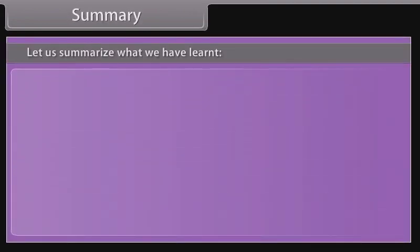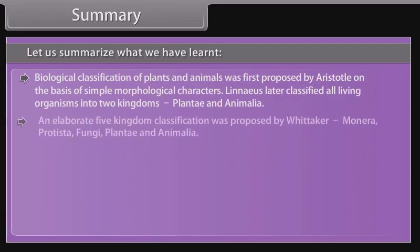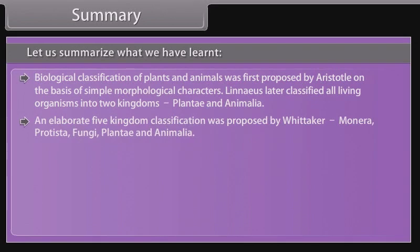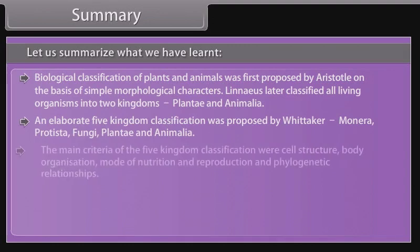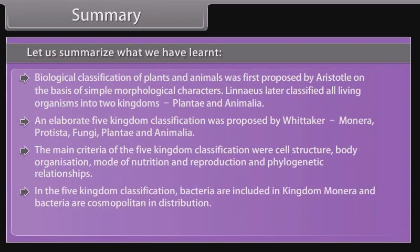Summary: Biological classification of plants and animals was first proposed by Aristotle on the basis of simple morphological characters. Linnaeus later classified all living organisms into two kingdoms — Plantae and Animalia. An elaborate five kingdom classification was proposed by Whittaker: Monera, Protista, Fungi, Plantae, and Animalia. The main criteria of the five kingdom classification were cell structure, body organization, mode of nutrition and reproduction, and phylogenetic relationships. In the five kingdom classification, bacteria are included in Kingdom Monera, and bacteria are cosmopolitan in distribution. These organisms show the most extensive metabolic diversity.